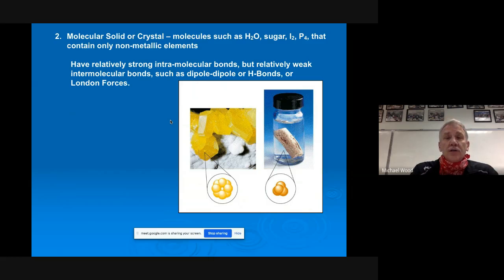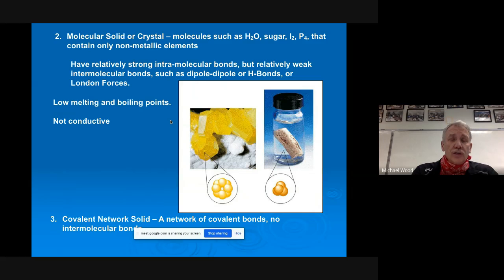Solid number one is an ionic solid, metal and non-metal. Solid number two is a molecular solid, two non-metals. They have strong intermolecular forces but weak intramolecular forces. They could be solid, liquid, or gas, they melt fairly easy, they're not conductive at all. Where we left off was on covalent network solids, a network of covalent bonds with no intermolecular bonds.